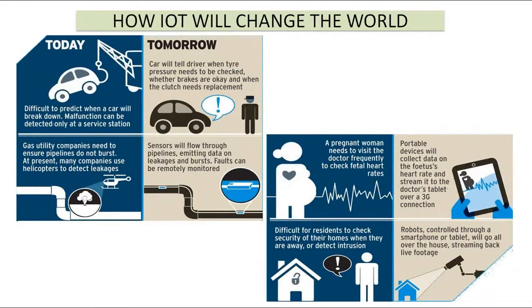How will IoT change the world? Today, if a car breaks down, there is only a corrective mechanism available — once the breakdown happens, we notice it and call the garage or maintenance guys to fix the problem. What we are seeing with Internet of Things going forward is that all cars can be monitored from a central location. If the car is able to communicate and send data regularly, it will be connected through wireless to a central platform where data can be captured.